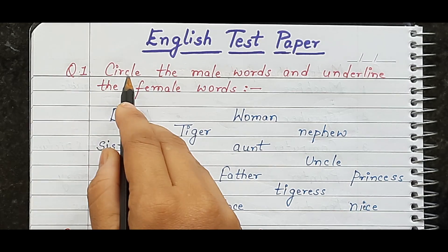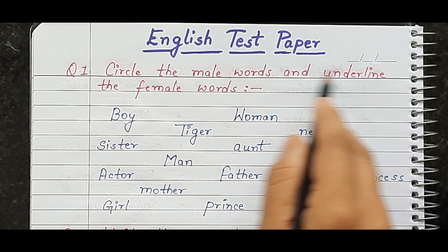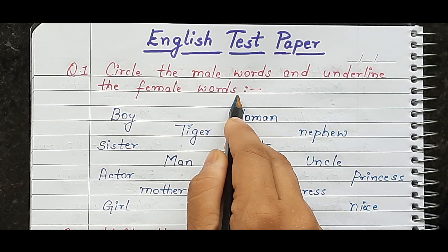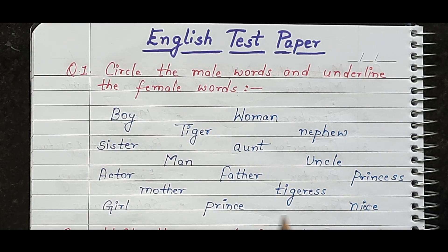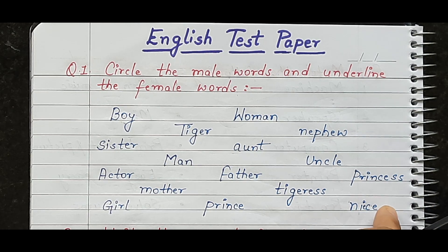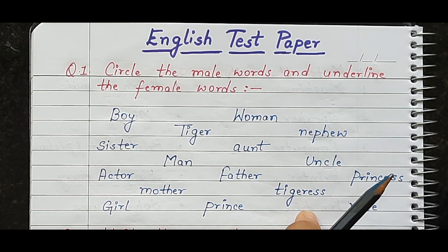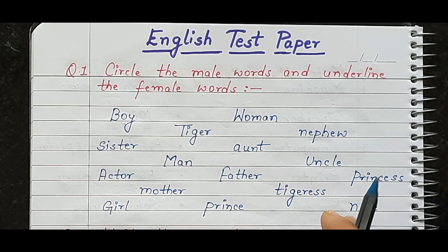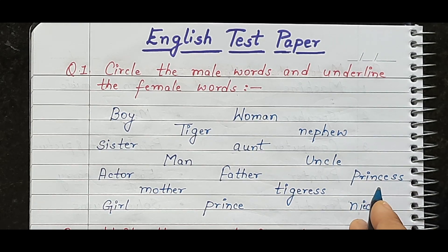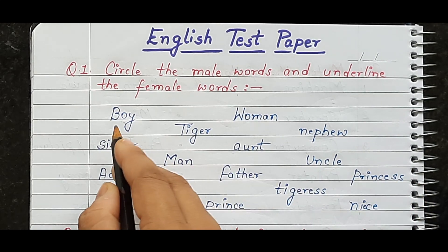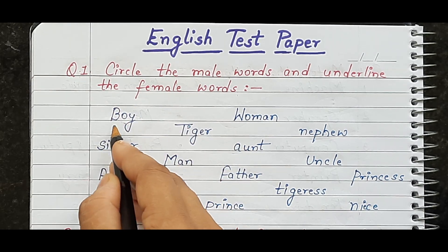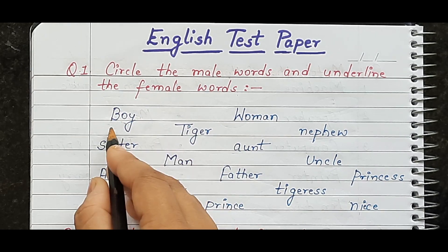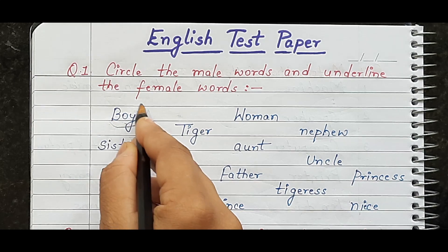Here is the first question: circle the male words and underline the female words. You will give many words to the child. The child has to identify the male words and circle them, and identify the female words and underline them. For example, here is 'boy' — boy is a male gender, so what do we do? We circle it.